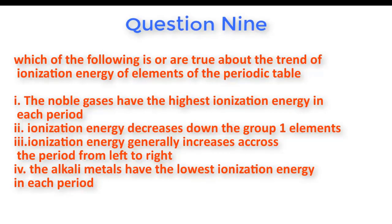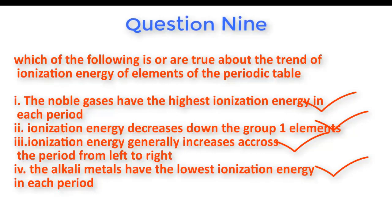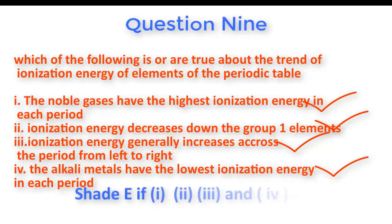Question number nine: Which of the following statements about the trend of ionization energies of elements in the periodic table are correct? All of them are correct: the noble gases have the highest ionization energies in each period, ionization energy decreases down the group, ionization energy generally increases from left to right across the period, and the alkali metals have the lowest ionization energies in each period. The right answer is E.